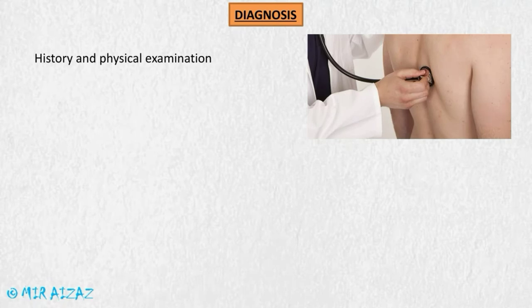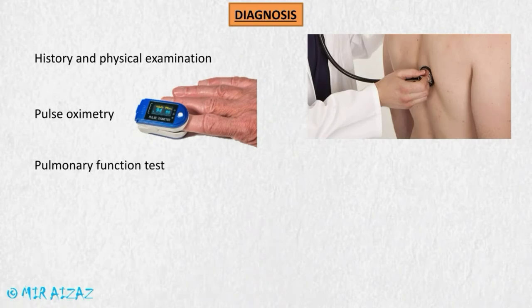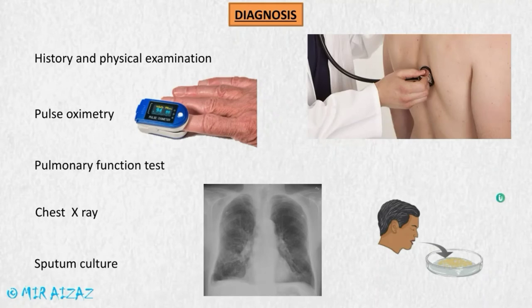To diagnose bronchitis, we obtain a complete history from the patient and perform a physical assessment focusing mainly on the respiratory system. We can use pulse oximetry to check the level of oxygen in the blood, and pulmonary function tests to know how well the lungs are functioning. We can also use chest X-ray and sputum culture to determine whether signs and symptoms are caused by a bacterial infection.